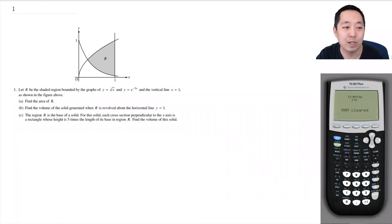Hey y'all this is Alan with Bothell STEM Coach and today we are going to be looking at the 2003 free response questions and we're going to start with number one here. So let R be the shaded region bounded by the graphs y equals square root of x and y equals e to the negative 3x, and the vertical line x equals 1.